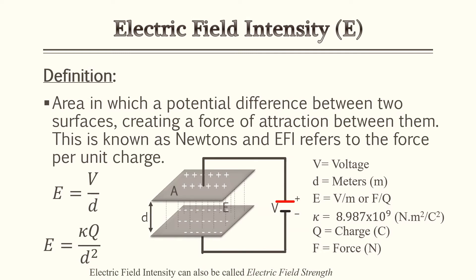The first associated term we'll go over is electric field intensity, which has a symbol of a capital E. Electric field intensity is the area in which a potential difference between two surfaces creates a field of attraction. In most practice problems we'll use two parallel plates associated with a capacitor, trying to find the electric field between them. This electric field is measured in volts per meter.